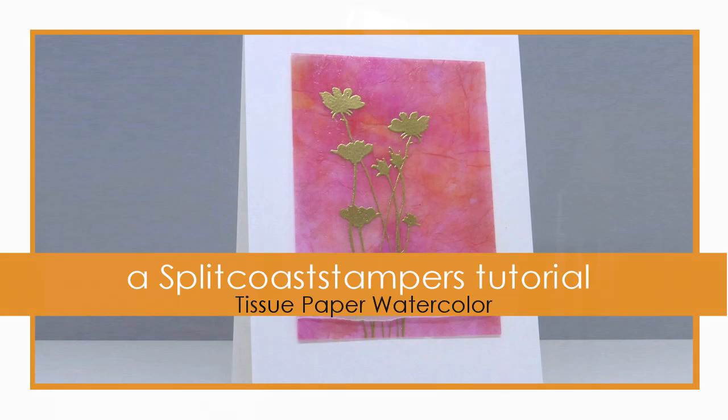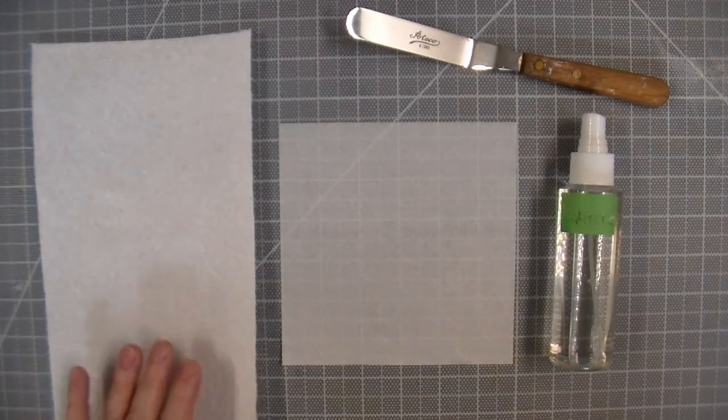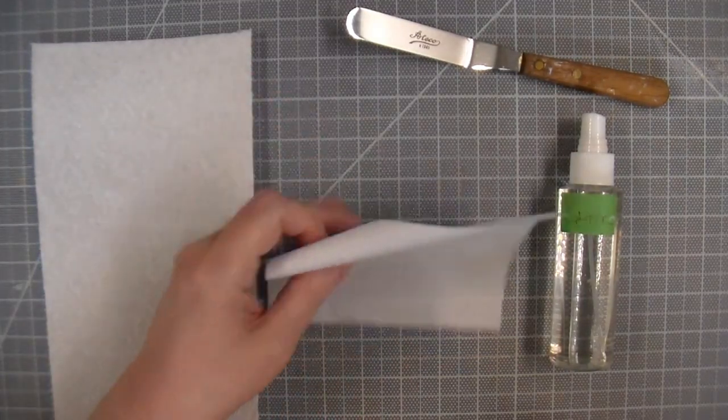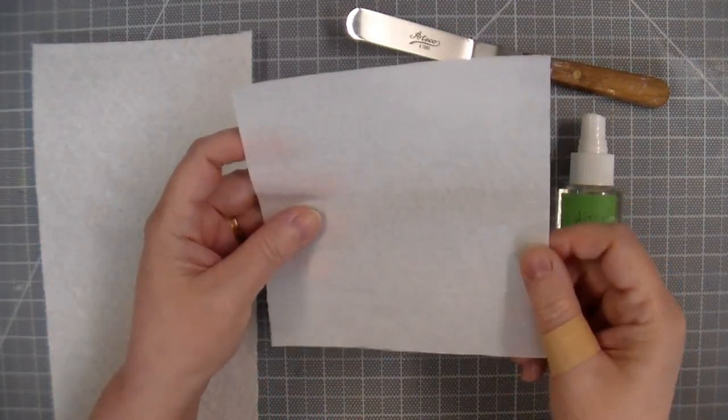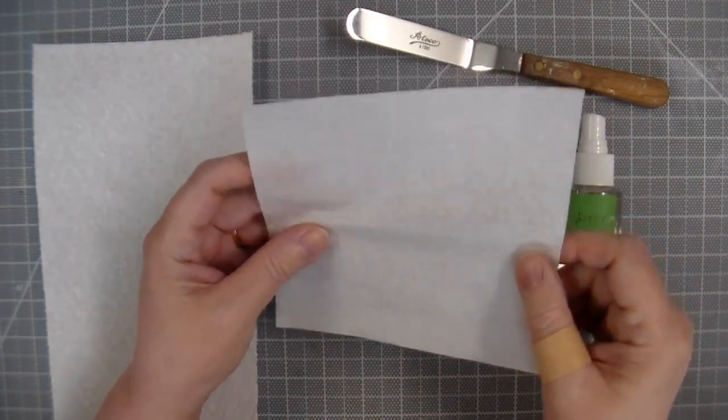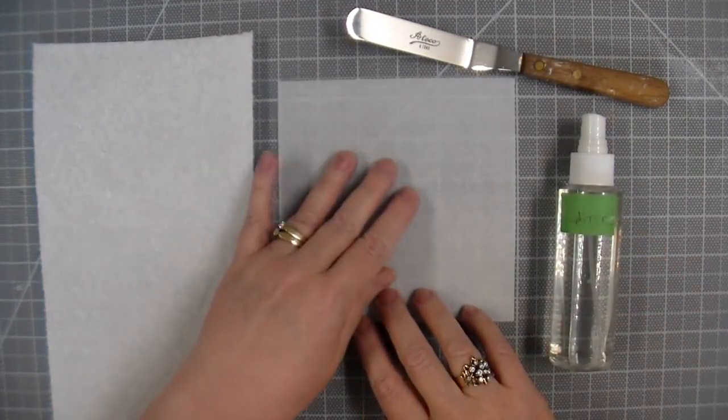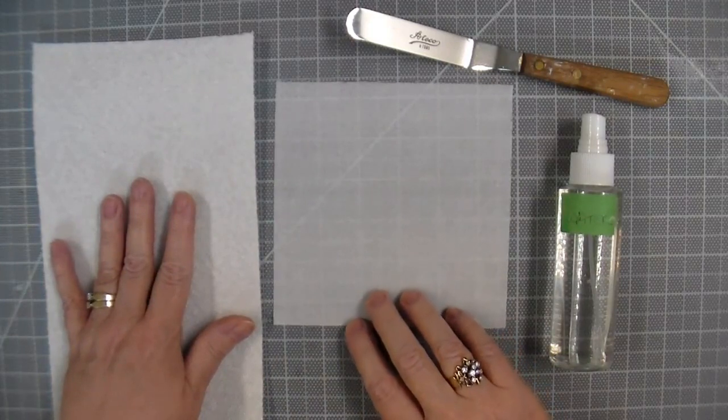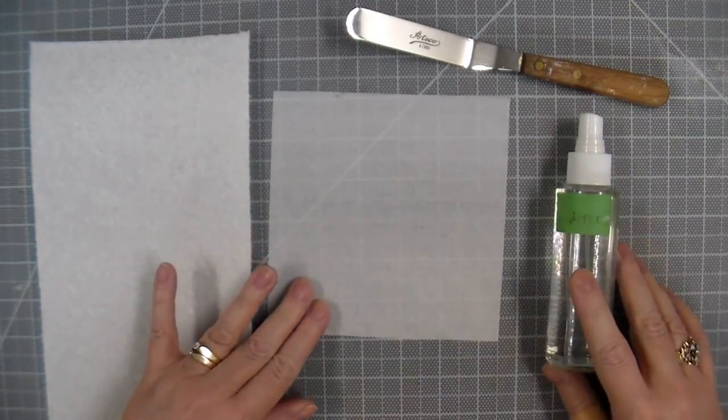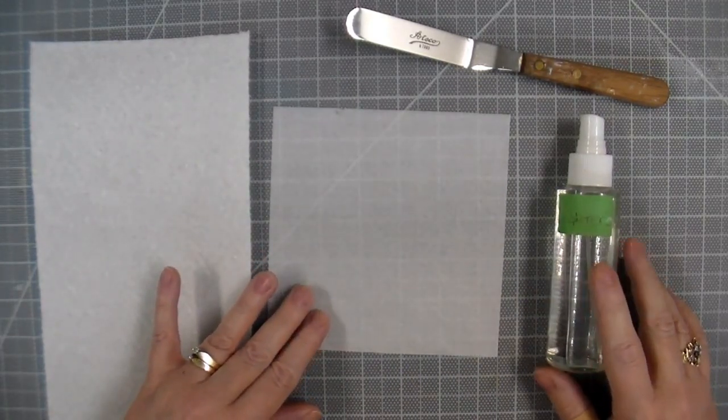Paul Thompson here and I'm going to share how I watercolor with tissue paper. So I've got a piece of white tissue paper, just plain white. You can get it in just about any store. I've got a piece of paper towel, a water mister, and I've also got a palette knife I use for moving ink around. You'll see that later.